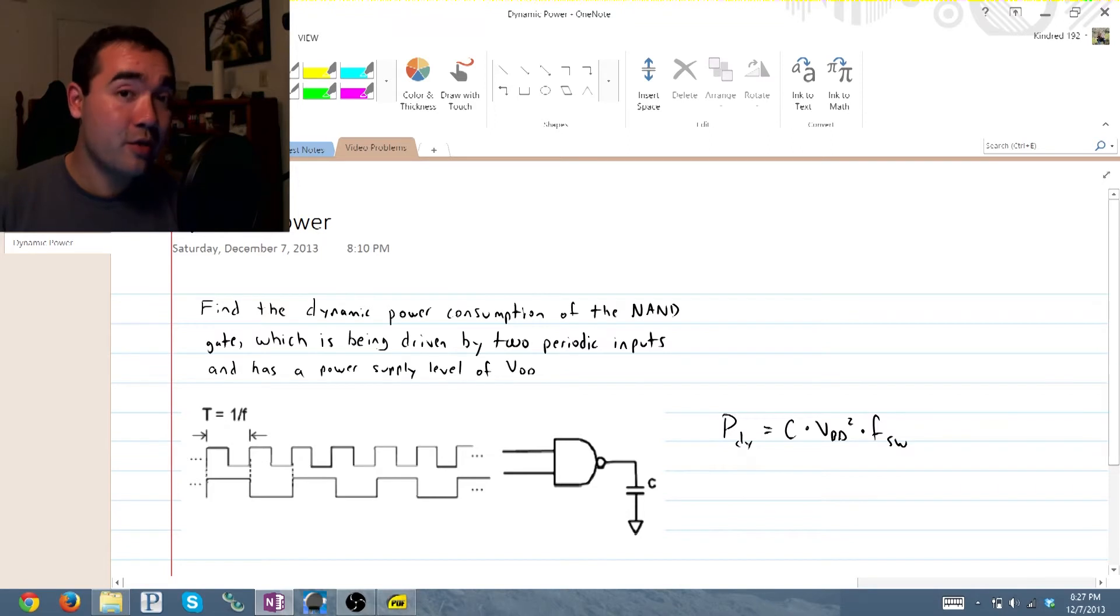Now you can look at switching frequency in a couple of different ways. You can say that it's just the frequency that the output is switching, or the more formal definition is alpha times F, where alpha is called the activity factor.